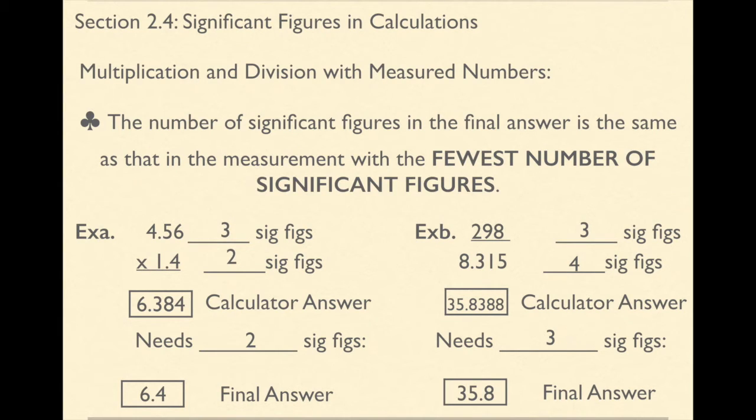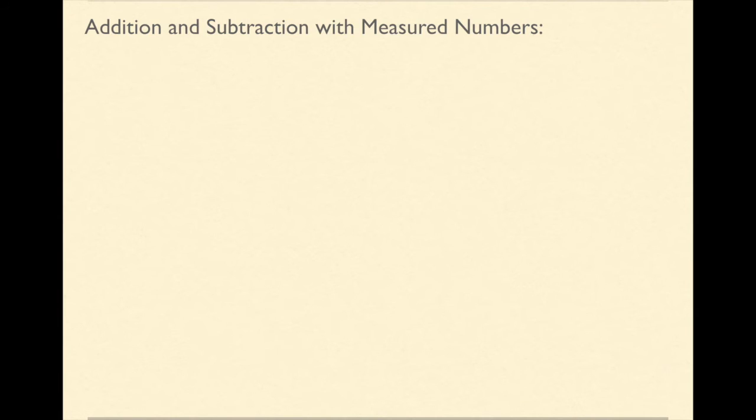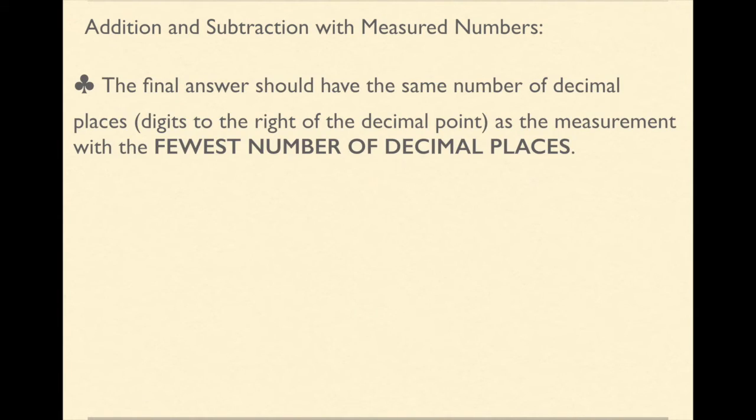Okay. Now that's if the very final step I complete in my calculation is multiplication or division. If the final step is addition or subtraction, then the final answer should have the same number of decimal places as the measurement with the fewest number of decimal places.